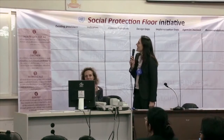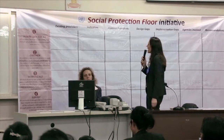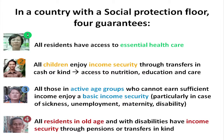The Social Protection Floor comprises four guarantees. First, all residents have access to essential healthcare. Second, all children enjoy income security — meaning social transfers to access nutrition, healthcare, and education. Third, all those in the active age group have sufficient and stable income security throughout their lives, covering working injury, maternity, disability, unemployment, and others. Fourth, all elderly residents and persons with disability have income security through pensions and transfers in kind.